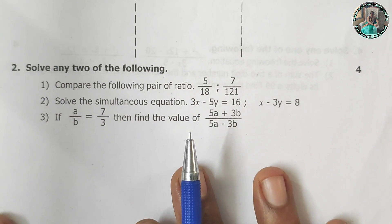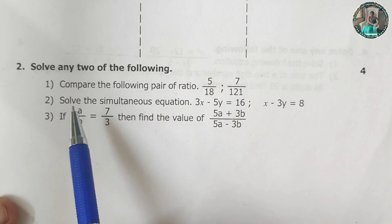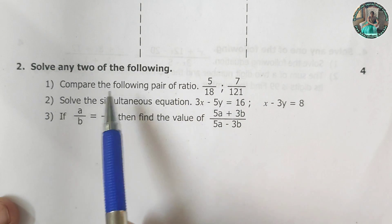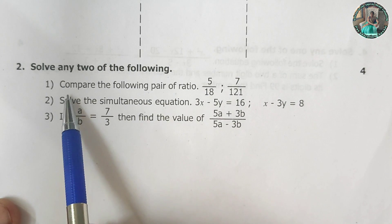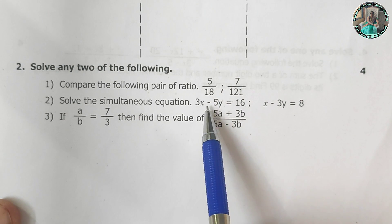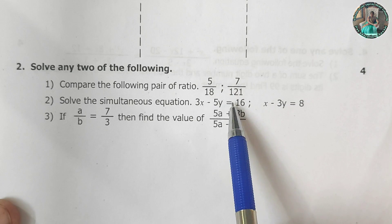Now question 2 is for 4 marks. Solve any two of the following. Each question has 2 marks. Compare the following pair of ratios. 5 upon 18 and 7 upon 121.